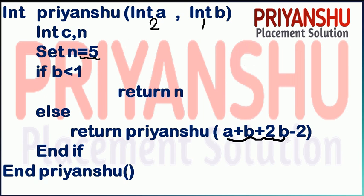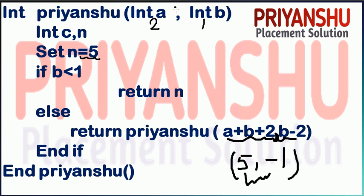Since the condition is false, this part is executed. Here: a plus b plus 2, so a is 2 and b is 1, giving 3; then 5, and b minus 2 is 1 minus 2 which is minus 1. This value is passed to the function call. So now the value of a is 5 and the value of b is minus 1.